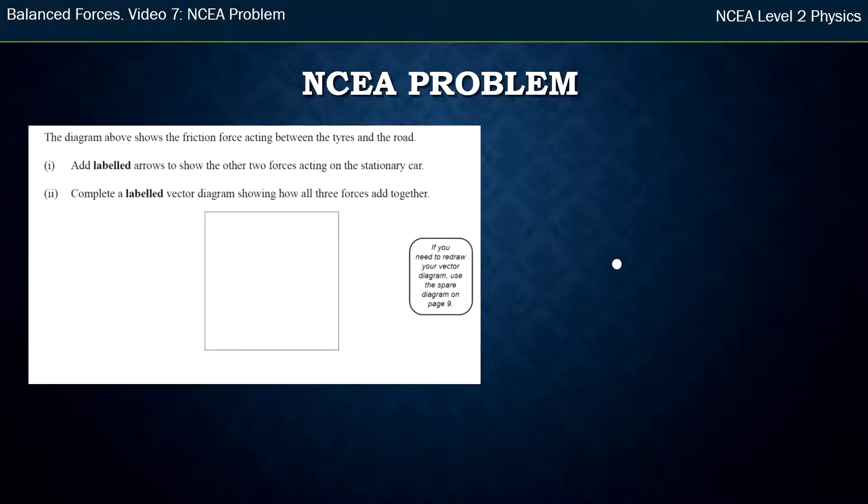All right, so the first question says they give you the friction force, can you add labelled arrows to show the other two forces acting on the stationary car? So we've got the downwards force of gravity labeled gravity from the earth on that car, the friction which was already there.